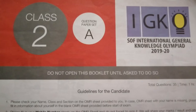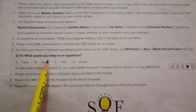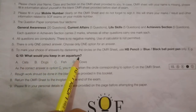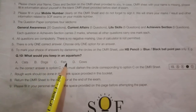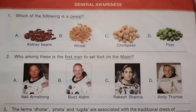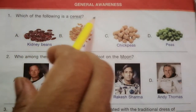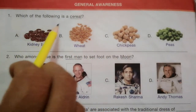What would you keep in an aquarium? The options are cats, dogs, fish, and cows. The answer is fish. The first topic is General Awareness.